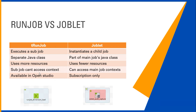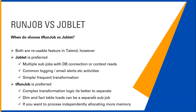One major difference is that tRun Job is available in the Open Studio, which is the community edition and free to use, whereas Joblet is a subscription-based component available in the enterprise edition. Here is a snapshot of tRun Job and here is the Joblet.